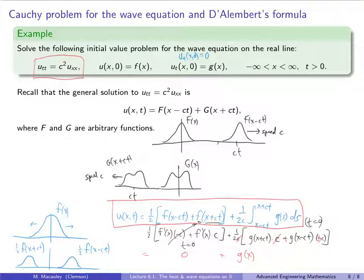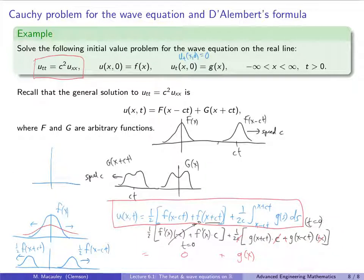To conclude, comparing the two equations: with the wave equation, an initial signal simply moves left and right, preserving its shape. With the heat equation, the signal dissipates — it spreads out and eventually goes to zero. Next time we'll look at the heat and wave equations on half-infinite domains, where x goes from 0 to infinity instead of the entire real line.